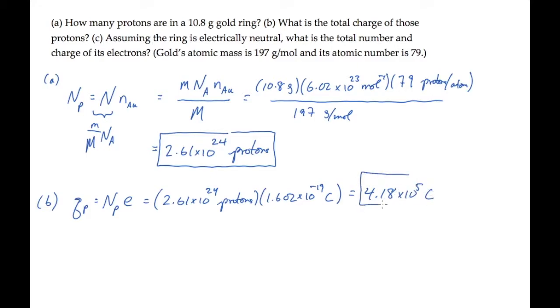Part C asks us to find the same values for the electrons in the gold ring. It tells us that the ring is electrically neutral, so the sum of all the charges, protons plus electrons, equals zero, which means that the electron charge is minus the proton charge. And we know that value.